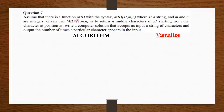Assume the function mid with the syntax mid(sl, m, n), where sl, m, and n are integers. Given that mid(sl, m, n) is to return n middle characters of sl starting from the character at position m, write a computer solution that accepts as input a string of characters and outputs the number of times a particular character appears in the input. So, you're going to find the number of times the character appears in a string or a word.